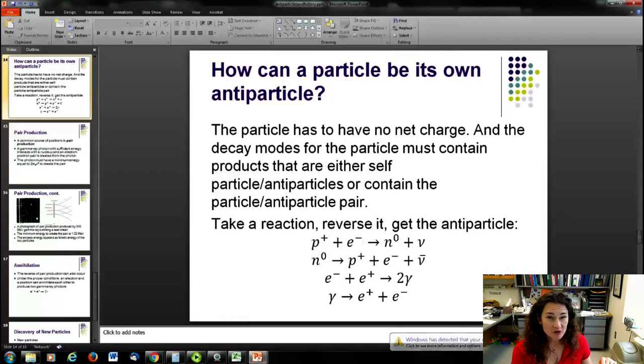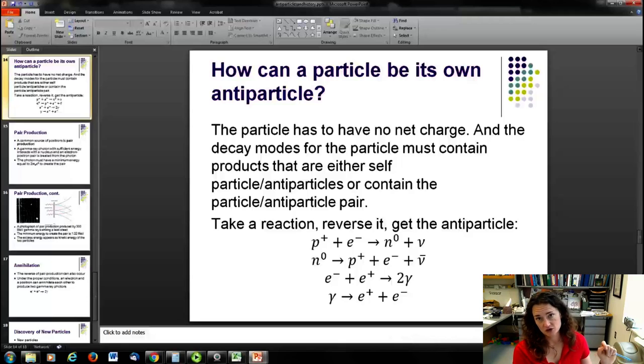How can a particle be its own antiparticle, you might ask? Well, the particle, first of all, it has to have no net charge because one of the hallmarks of having a particle-antiparticle pair is that they be of opposite charge. So you have to be neutrally charged to be your own antiparticle. And the decay modes for the particle have to contain products that are either self-particle antiparticles or contain the particle-antiparticle pair. So that's the rules for classification saying that you're an antiparticle. Basically though, in summation, if you take a reaction and you reverse it, you're going to get the antiparticle.